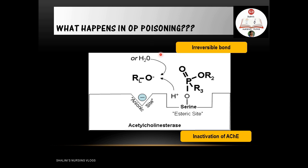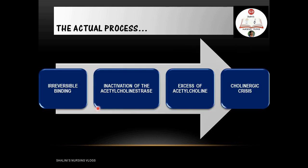What happens in OP poisoning? There are two sites on the acetylcholinesterase enzyme: the anionic site and the esteratic site. The organophosphorus compound binds to acetylcholinesterase in an irreversible bond, leading to inactivation of the enzyme. This results in excess acetylcholine at the synaptic cleft, leading to something called cholinergic crisis.